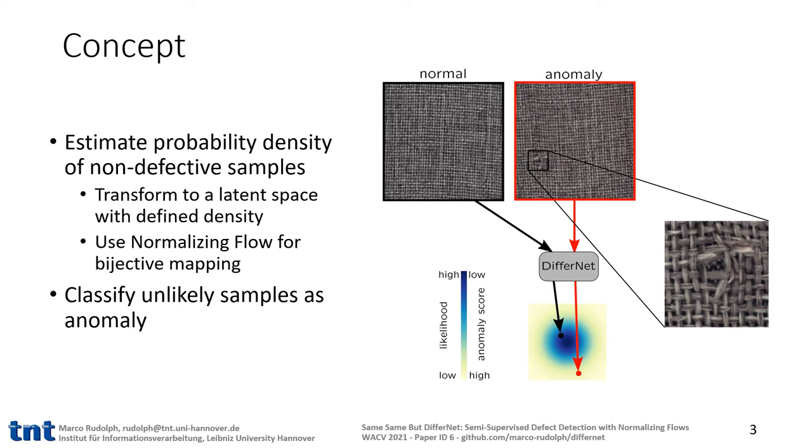What makes DifferNet special is that it includes a normalizing flow, which maps bijectively. In this way, areas with a high likelihood in the latent space should be exclusively reserved for common samples, whereas uncommon samples are forcely mapped to the remaining unlikely areas.